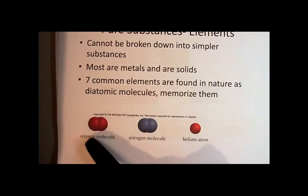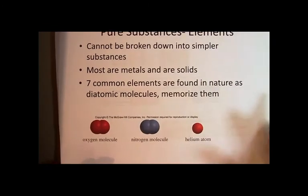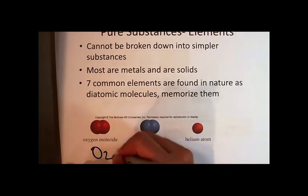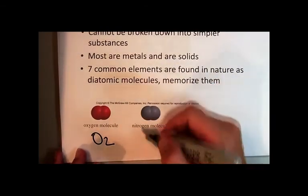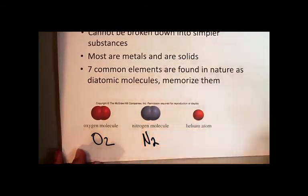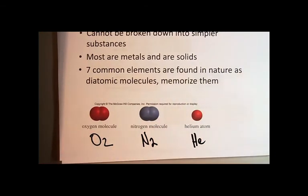So oxygen in nature, when we find it, for example, in the air, it's going to exist as the diatomic molecule, O2. And nitrogen is going to exist as the diatomic molecule, N2, whereas helium just exists as an atom. So that's what we mean by a diatomic molecule.